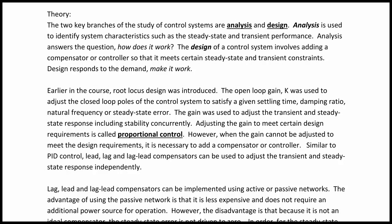As you may have observed by now, there are two key branches of the study of control systems: analysis and design. Analysis is used to identify system characteristics such as steady-state and transient performance — it answers the question, how does it work? The design of a control system involves adding a compensator or controller so that it meets certain steady-state and transient constraints, and this design responds to the demand: make it work.